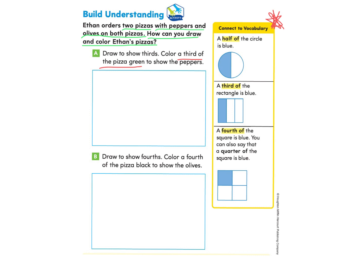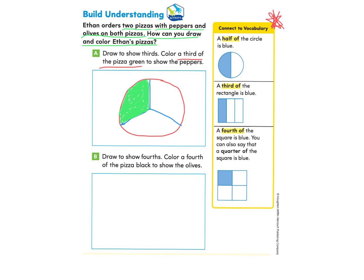First we're going to draw a circle for the pizza. Then we need to show thirds, so we're going to make that upside-down Y — make a line, then a line that meets it, and another line that meets it. Now we have three equal parts: one, two, three. Then color a third of the pizza green to show those peppers on Ethan's pizza. If you don't have green, you can just shade it in with your pencil.